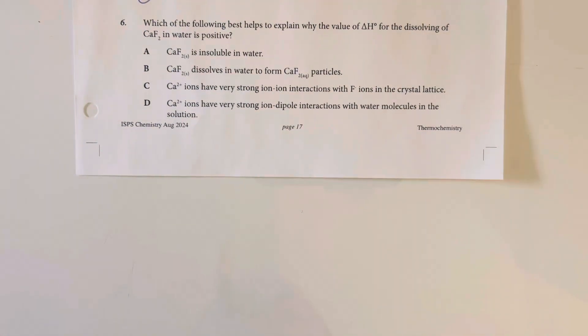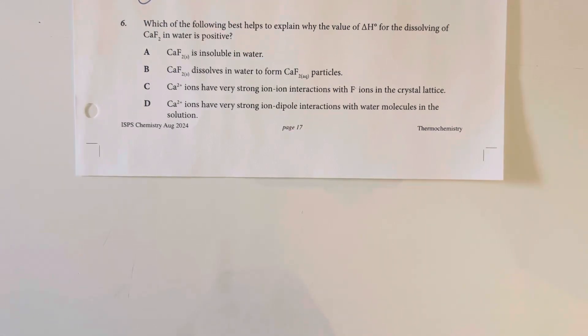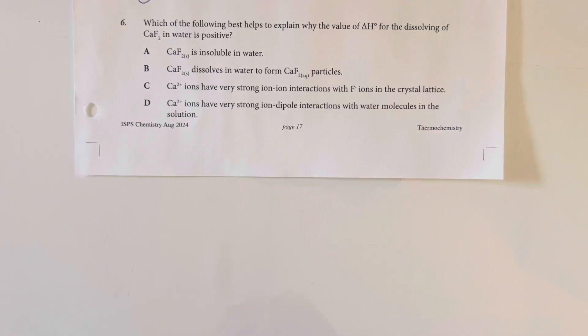Which of the following best helps to explain why the value for delta H for dissolving of calcium fluoride in water is positive? So, if being positive means that I had to put in energy in order to get calcium fluoride to dissolve, so that means that the calcium and fluoride did not really want to separate. So, I am going to say that the calcium and the fluorine were very attracted to each other.